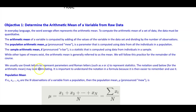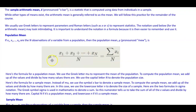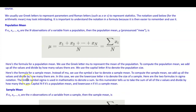The notation used for the arithmetic mean may look intimidating, but it is important to understand it. For the population mean, if x₁, x₂, through x_N are the N observations of a variable from a population, then the population mean mu equals the sum of all x values divided by N. The Greek letter sigma is used to denote summation, so the numerator tells us to take the sum of all x values and divide by the number of observations. We use capital N to denote the population size.